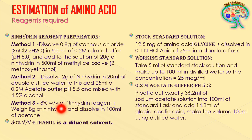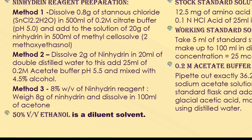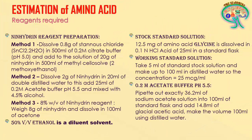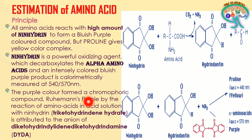Ethanol is used as a diluent to dilute the solvents used in the experiment, helping to reduce the intensity of the color and make the solution appropriate for readings. For the stock standard solution, dissolve 12.5 milligrams of the amino acid glycine in 25 ml of 0.1 normal hydrochloric acid in a standard flask.